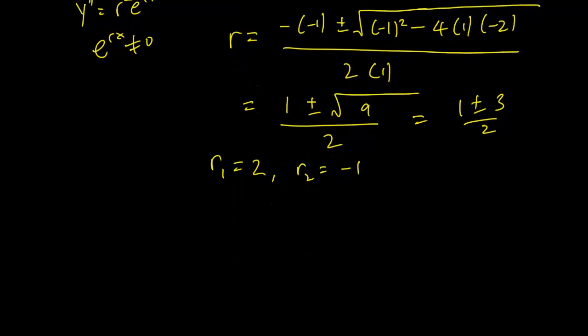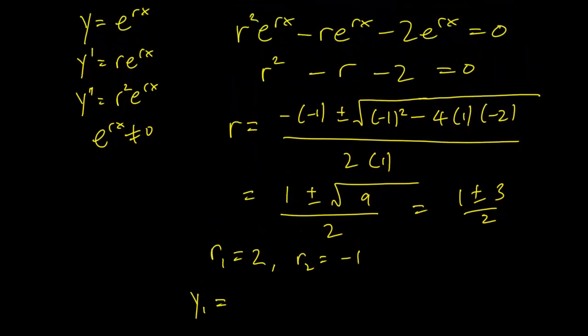And this leads to two linearly independent solutions for y. Because y equals e^(rx), so y1 is equal to e^(2x) and y2 is equal to e^(-x).